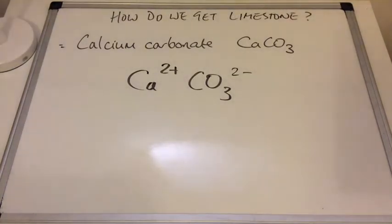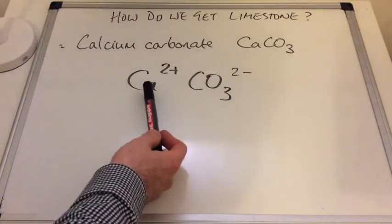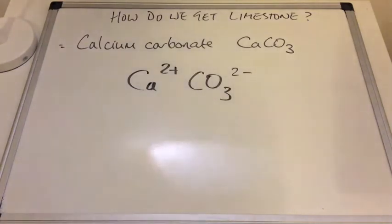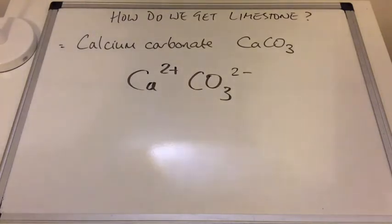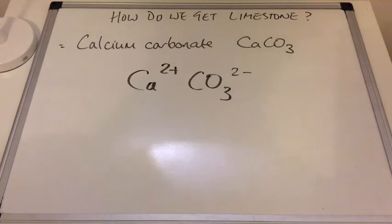So how do we get limestone? Well, these two ions are very strongly attracted towards each other, making calcium carbonate a very stable substance — so stable that it just occurs in the ground. We get it by quarrying.